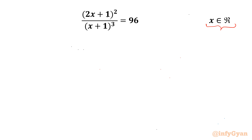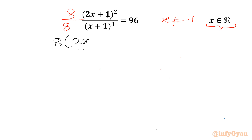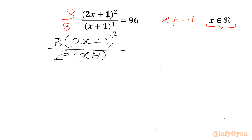Let's get started by writing that the denominator cannot be 0, so x cannot be negative 1. Now I will multiply the numerator and denominator by 8. We can write our equation as 8 times (2x + 1)² over 2³ times (x + 1)³ equal to 96.